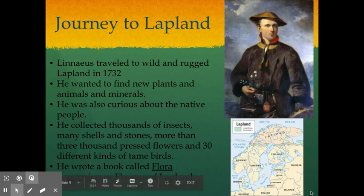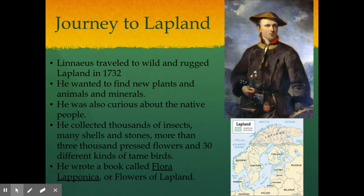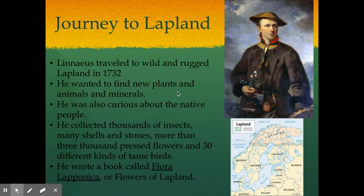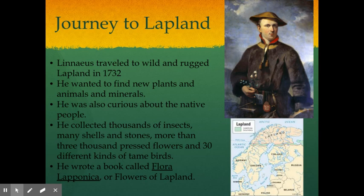On his journey to Lapland — the northernmost parts of Norway, Sweden, and Finland — Carl traveled in hopes of finding new plants, animals, and minerals. He was also curious about the native people who lived there. On that journey he basically did a nature expedition. He collected thousands of insects, many shells and stones, more than 3,000 pressed flowers, and 30 different kinds of tame birds. He wrote a book called Flora Laponica, which is Latin for Flowers of Lapland. He basically went on his journey, cataloged everything he saw, and then came back and wrote a book about it.